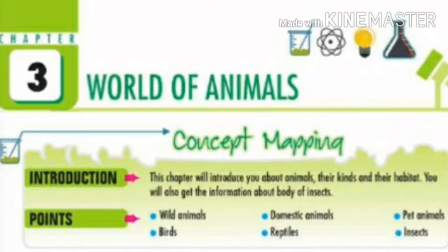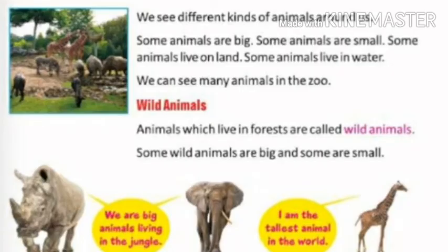Let's start with the chapter. We see different kinds of animals. Some animals are big, some animals are small. In our environment we can see different types of animals. Some are big animals, some are small animals. Some animals live on land, some animals live in water. Some are land animals and some are aquatic animals or water animals.